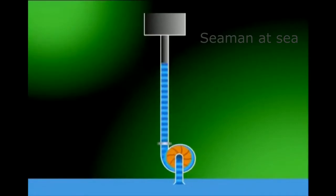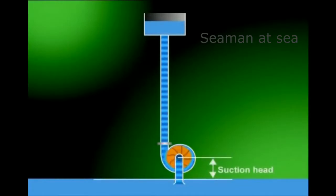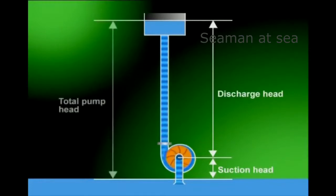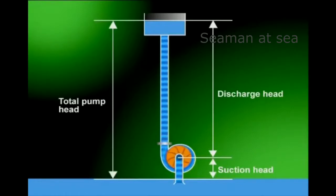The height to which a pump sucks up water is called pump head. The height from the pump's base plane to the water suction level is called suction head, while the height from the pump's base plane to the water discharge level is called discharge head. The total of both heads is called total pump head. Total pump head means the height to which the pump actually transfers water from a low water level to a high level.